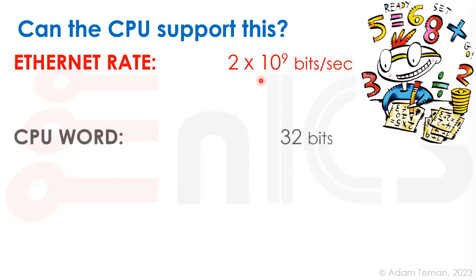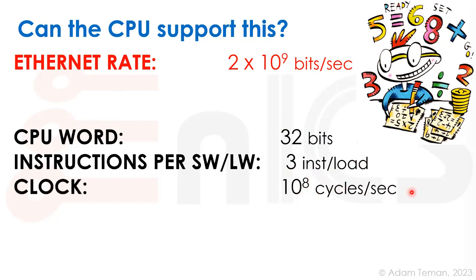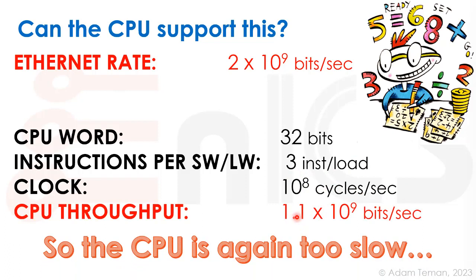The Ethernet rate is 2 gigabits per second and we have a small CPU with a 32-bit word. It takes a bare minimum of three instructions to store and load a word — a load word operation, increment the address, and loop back. That gives us only about 11 bits per instruction. At 100 MHz, we get a whopping 1.1 gigabits per second, which is smaller than our Ethernet rate. The CPU really can't handle that.